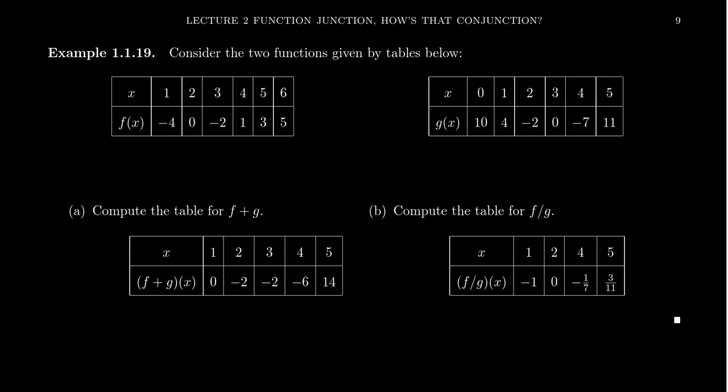So if we want to define f plus g, the first thing to think about is actually the domain. What's the domain of this thing? The domain of f plus g, like we saw in the previous slide, this is going to be all the numbers for which f and g are simultaneously defined. So notice that f is defined 1 through 6, but g is defined 0 through 5. So you'll notice 0 is defined for g, but it's not defined for f. 1, 2, 3, 4 are good, but 6 is defined for f, but not defined for g. So the domain of our function is going to be 1, 2, 3, 4, and 5. We can't define f plus g at 0 because f of 0 is undefined. We can't do f plus g at 6 because g of 6 is undefined.